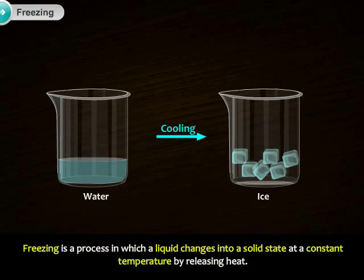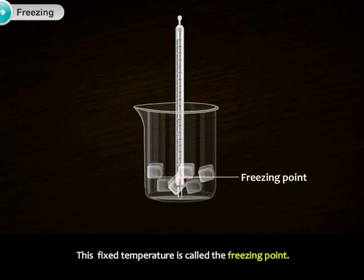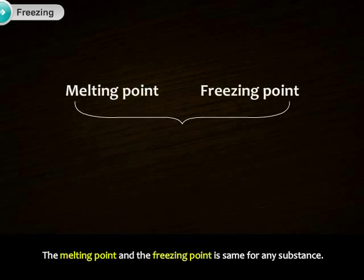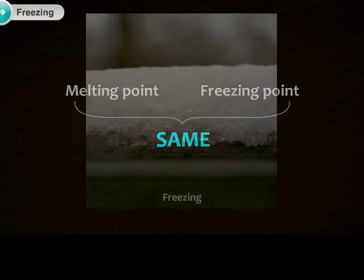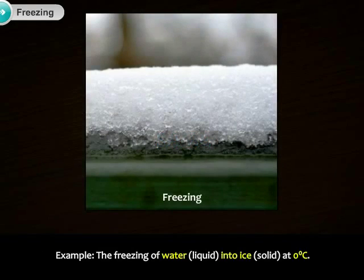Freezing is a process in which a liquid changes into solid state at a constant temperature by releasing heat. This fixed temperature is called the freezing point. The melting point and the freezing point are the same for any substance. For example, the freezing of water into ice at 0 degrees Celsius.